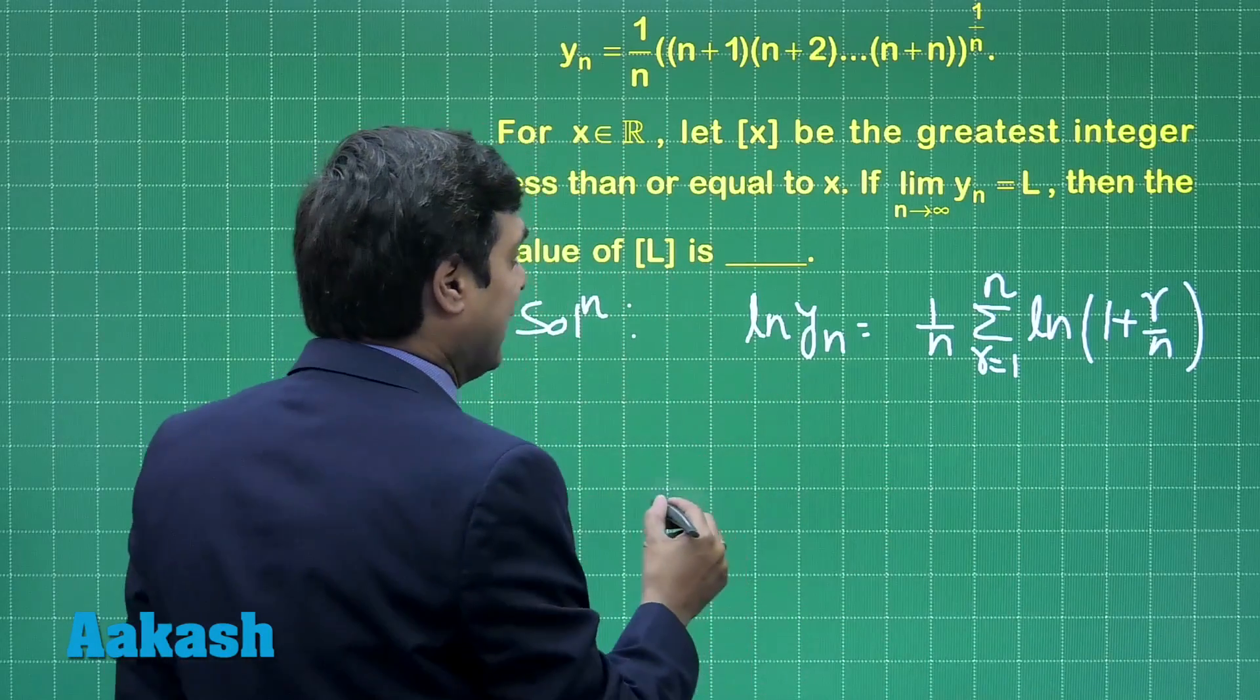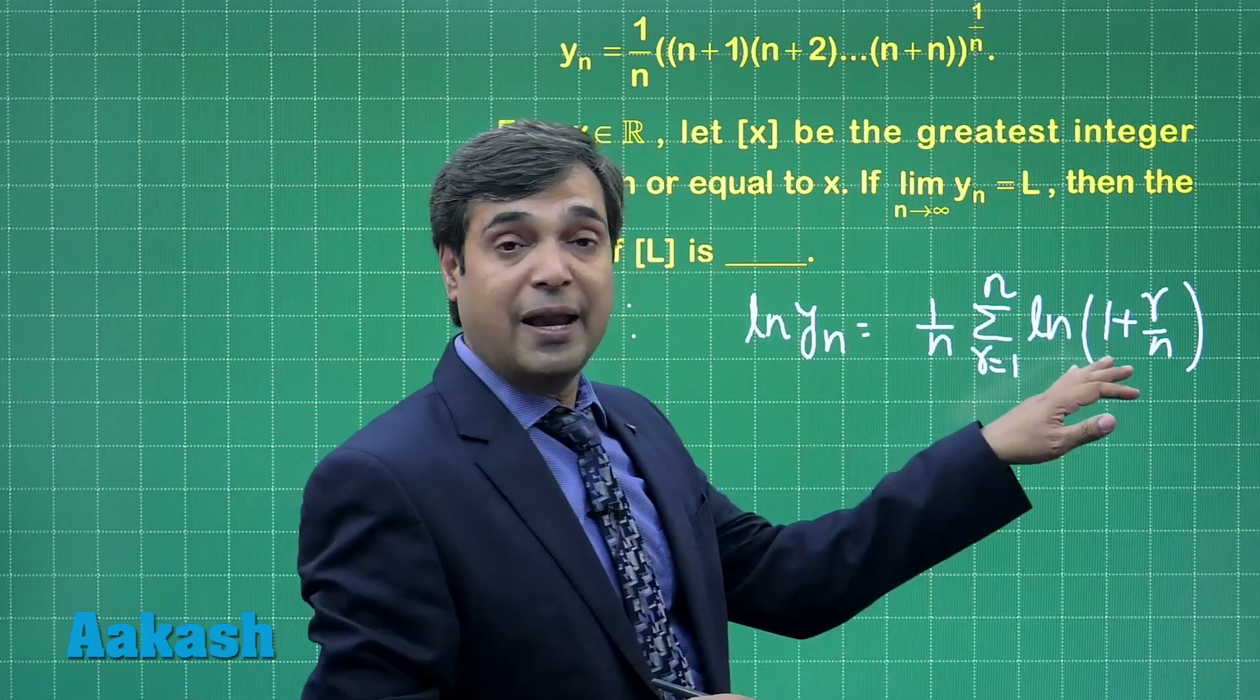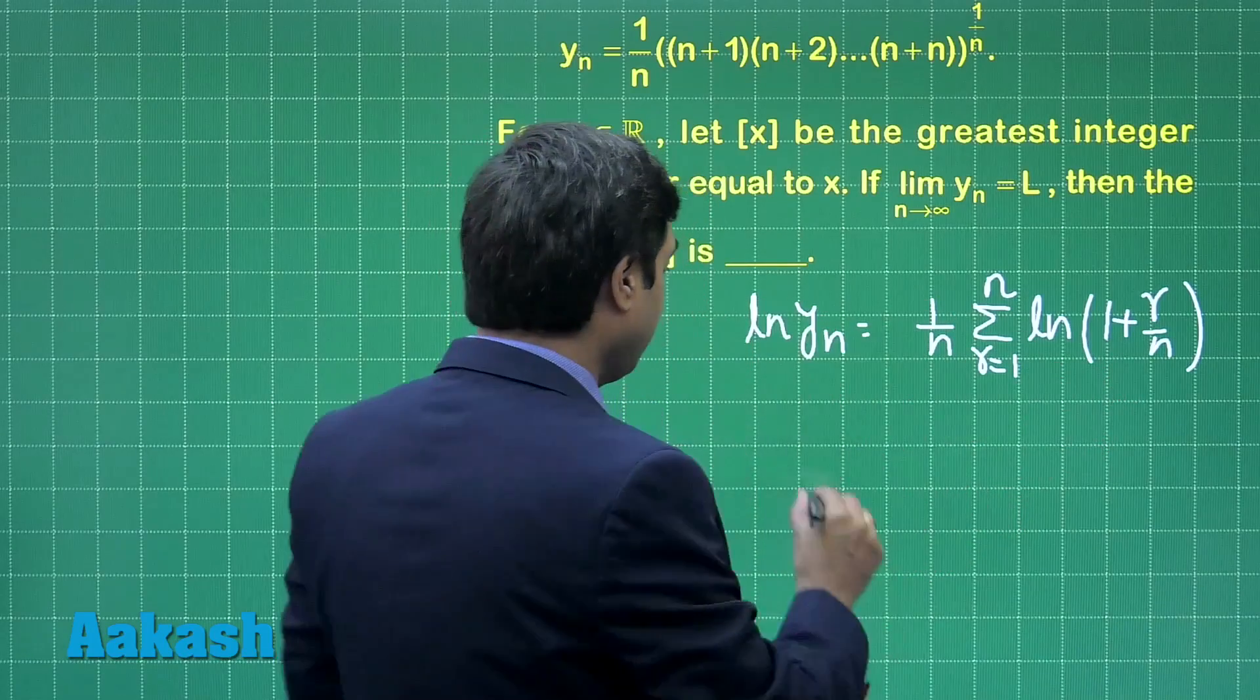This can be converted in terms of integral if limit n is approaching to infinity. We have to find the same term.